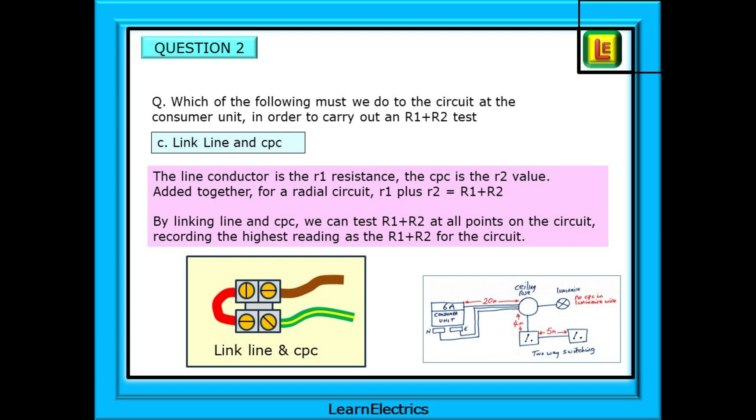By linking line and CPC we can test R1 plus R2 at all points on the circuit recording the highest reading as the R1 plus R2 for the circuit. Big R1 plus R2 is an expression that stays together. We cannot have big R1 on its own or big R2 on its own. They don't exist as numbers. The number is big R1 plus R2. Little R1 is a number on its own and so is little R2 and they can be added together. We test along the brown wire or little R1 through the link and back to the test meter on the green and yellow wire little R2.